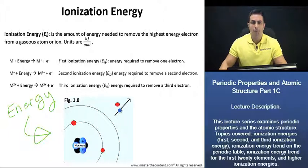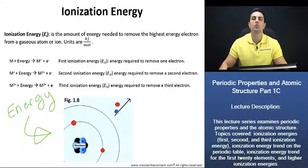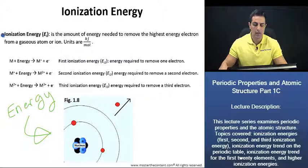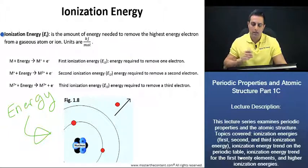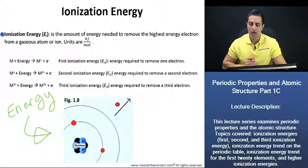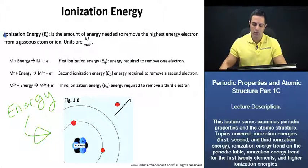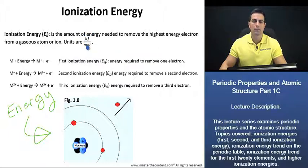The amount of energy that it took to actually remove this electron is what is known as the ionization energy. The ionization energy is the amount of energy needed to remove the highest energy electron from a gaseous atom or ion. The units for ionization energy are kilojoules per mole, as we see here.